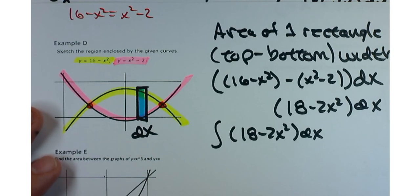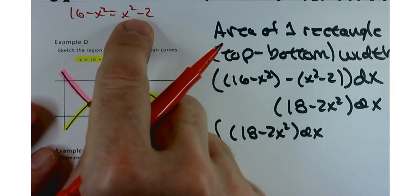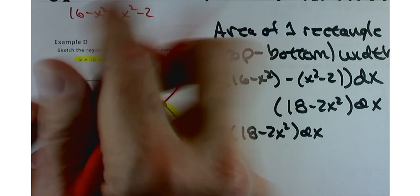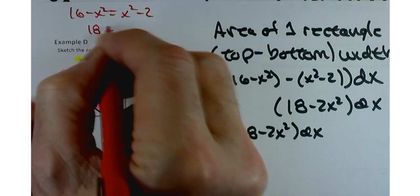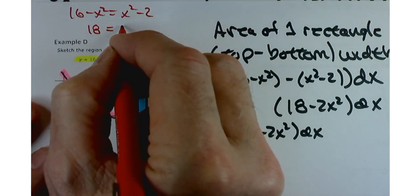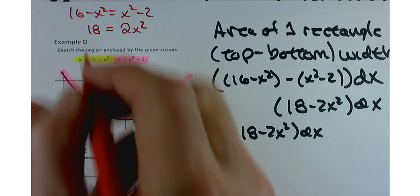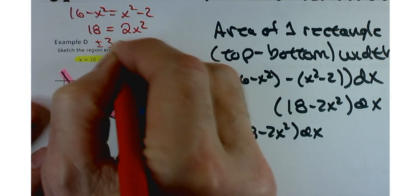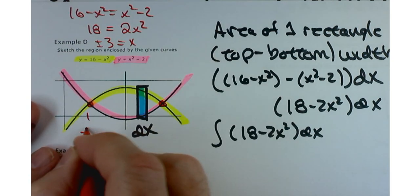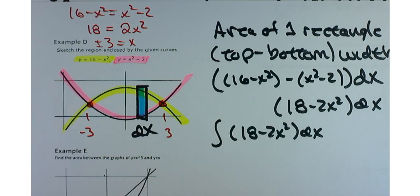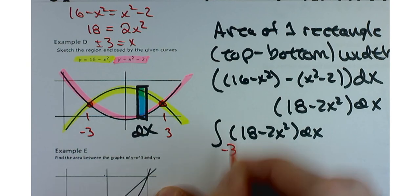You're going to make them equal to each other. So we're going to take 16 minus x squared and set it equal to x squared minus 2. Adding x squared to both sides and 2 to both sides gives an 18 over here and 2x squared over here. Divide by 2, you get 9. Take the square root, you get plus or minus 3 equals x.